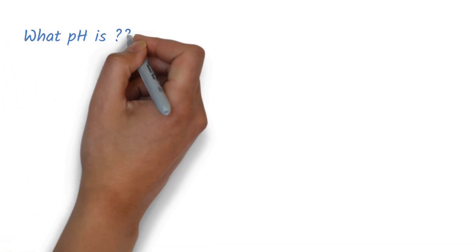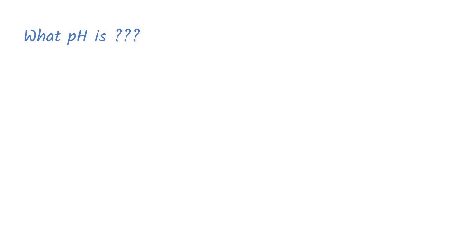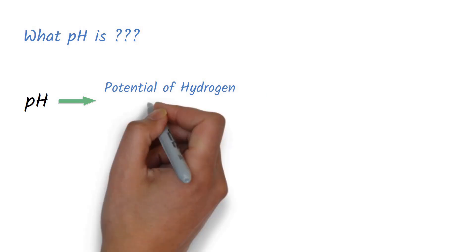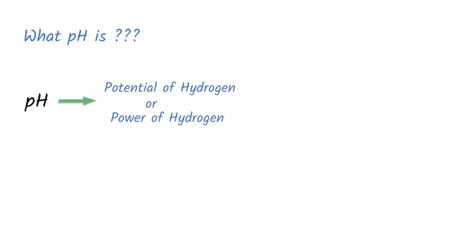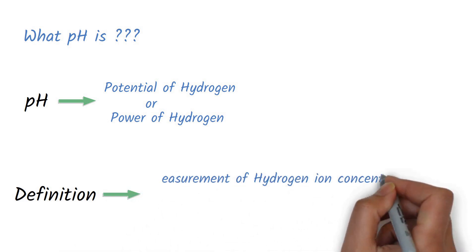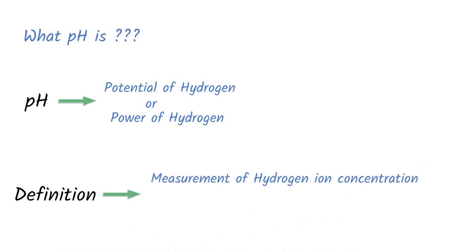Now let us see what pH is all about. pH stands for potential of hydrogen, or some may call it power of hydrogen. pH can be defined as measurement of hydrogen ion concentration in a solution.